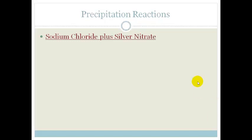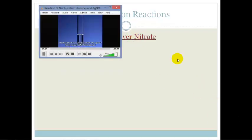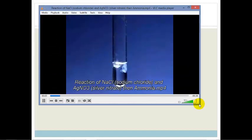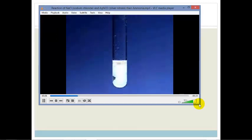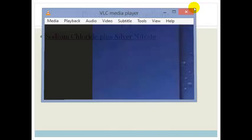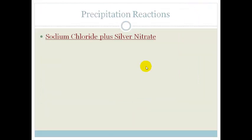Let's start off with a precipitation reaction. So we're going to take sodium chloride and add silver nitrate. Silver nitrate is added to a sodium chloride solution, forming a precipitate of silver chloride. So you saw that sodium chloride, when it's added to silver nitrate or vice versa, it forms a white precipitate.